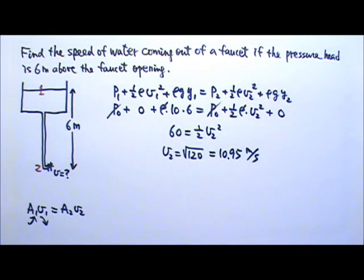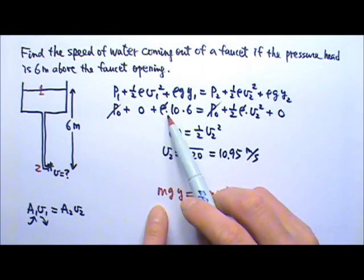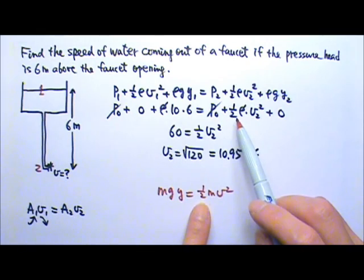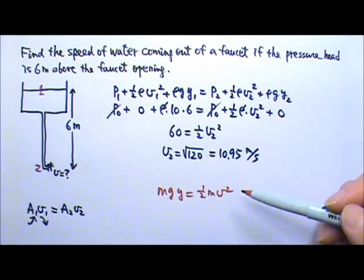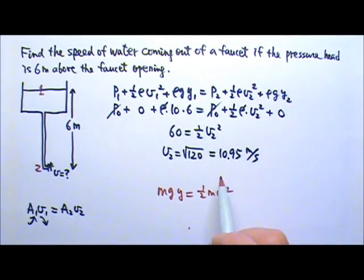Just in case if you haven't noticed, we can actually get the same answer if we use mgy equals one half mv squared. Because the rho gy and the one half rho V squared, the rho's cancel over here, the m's cancel over here, you will get exactly the same answer.